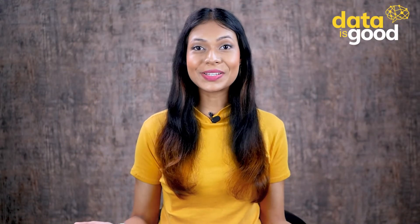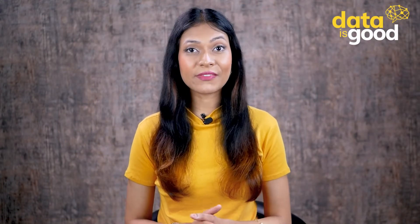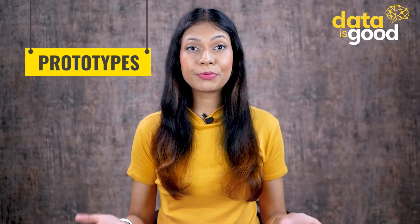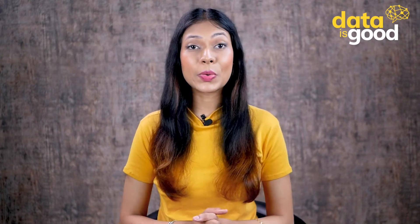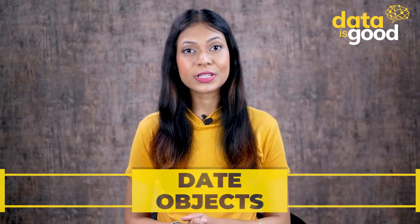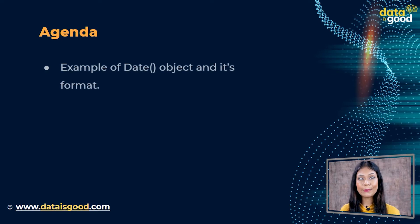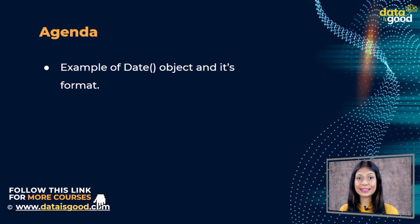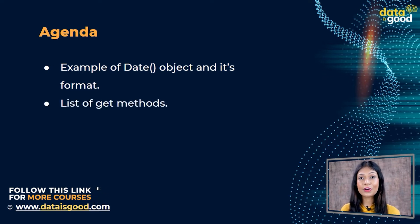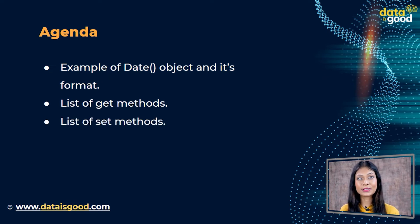Hello and welcome back. As you know, we are learning objects in JavaScript. In the last lecture we learned about prototypes. In this session we are going to learn the Date object in JavaScript. We will start with an example of the Date object and see the format with which we can get any date, followed by a list of get methods and important examples, then a list of set methods and important examples, and at the end there is an assignment for you.